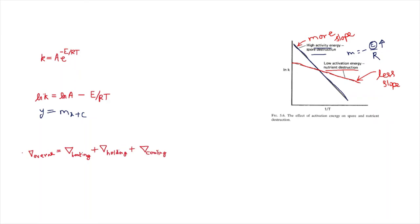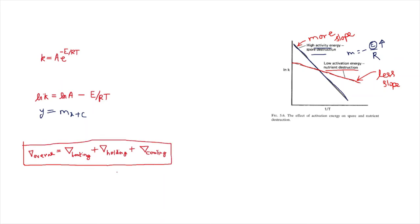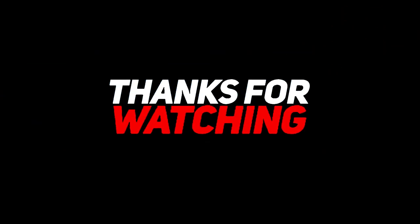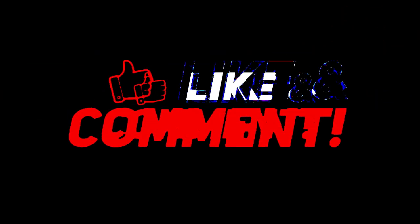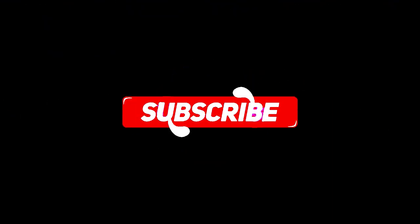Another important point: we have observed the three periods during batch sterilization — heating period, holding period, and cooling period — and we have discussed del factor. If a question asks for the del factor for the overall sterilization process, then the overall del factor equals the sum of the individual del factors: del factor overall = del factor (heating) + del factor (cooling) + del factor (holding).